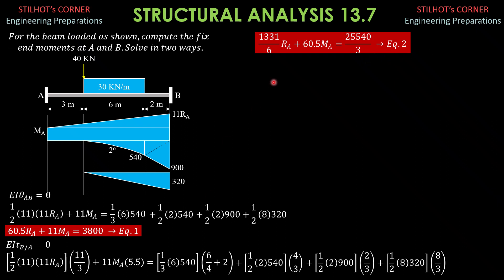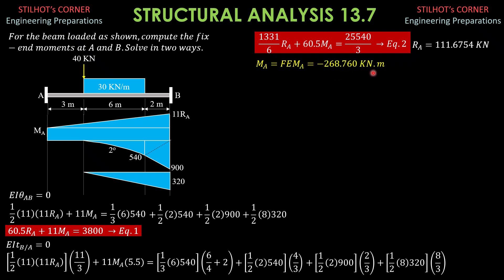Solving these two equations simultaneously, we get RA = 111.6754 kN, and what is important is MA — the fixed-end moment at A — which equals negative 268.760 kN·m.